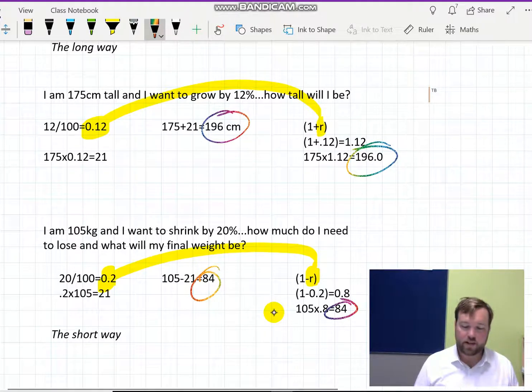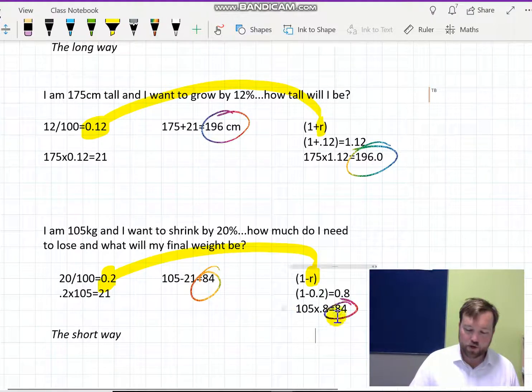All right, so two ways to do it. Both are completely valid, but the multiplier is quite a neat result that we use later on when it comes to compound interest. So it's worth knowing that way as well.